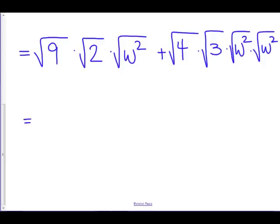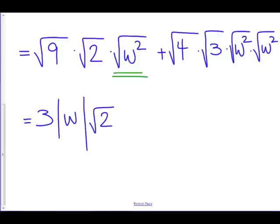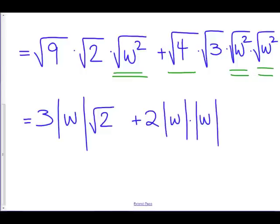Root 9, that's 3. Root 2, that stays root 2. But the root w squared, that's the absolute value of w, because we have an even index. Plus, root 4, that's 2. And root w squared and root w squared, those are both the absolute value of w. So we have 2 times the absolute value of w times the absolute value of w times that root 3 in there.